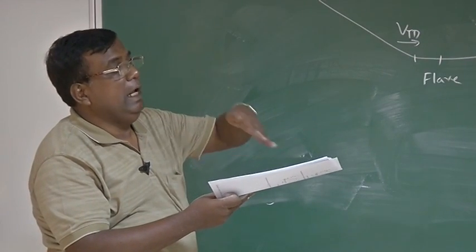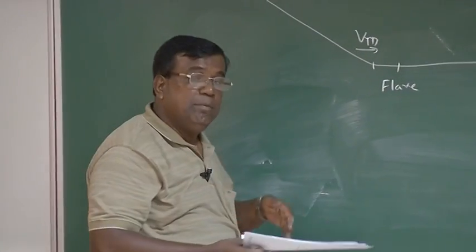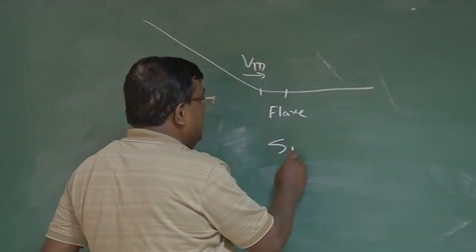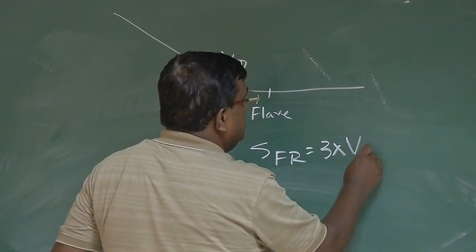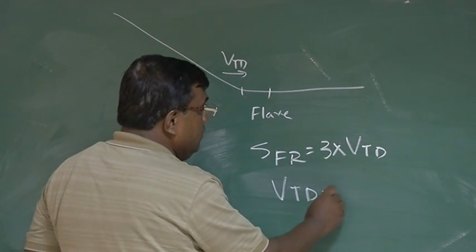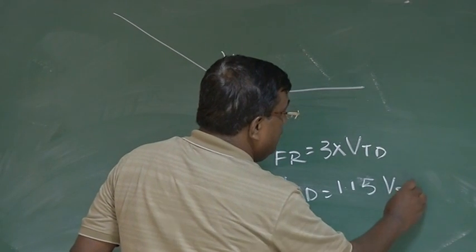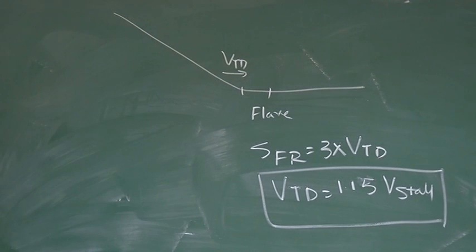It has to flare up and this operation takes 3 seconds, maximum 3 seconds, and it happens at a touchdown speed. So, this S flare will be 3 into V touchdown. V touchdown is 1.15 V stall. So, S_FR is also calculated.